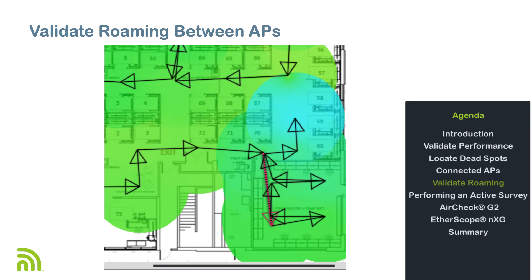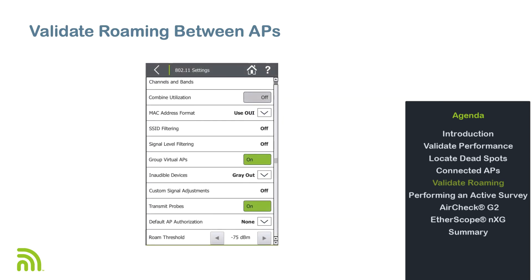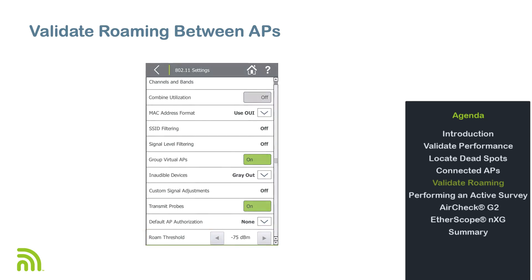Smooth and successful roaming is a key feature of any Wi-Fi network. When performing an active survey, roaming events are displayed in LinkLive as dashed lines between data points. This provides a clear visual indicator of where roaming occurred and between which access points. Within the AirMapper configuration, it is possible to configure the roaming threshold, allowing the application to simulate client roaming behavior.